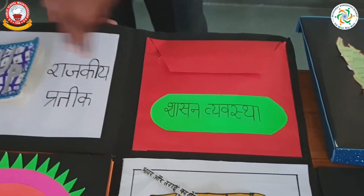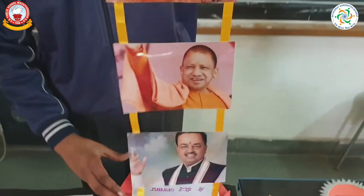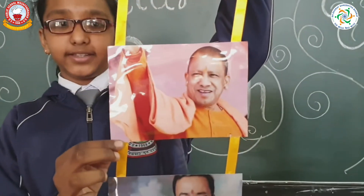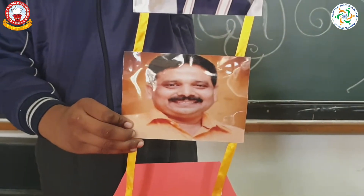When we open Uttar Pradesh, this is the administration: Anandiben Patel, Rajyapal; Shri Yogi Adityanath, Mukhya Mantri; Shri Keshav Prasad Maurya, Deputy Mukhya Mantri; Shri Raminder Jaiswal, Grih Mantri.